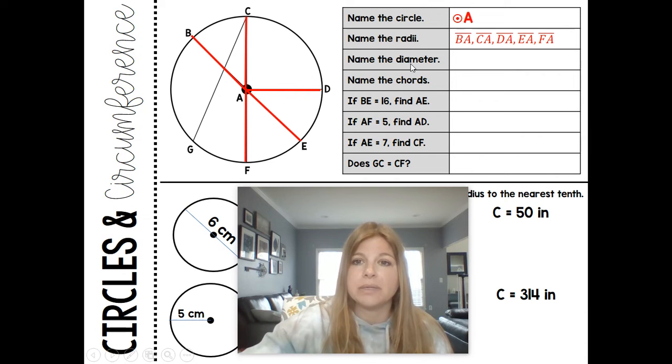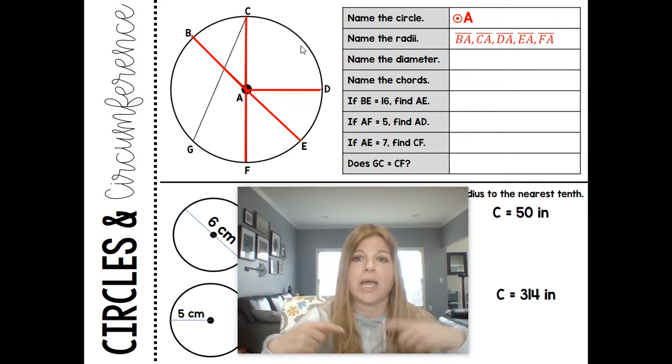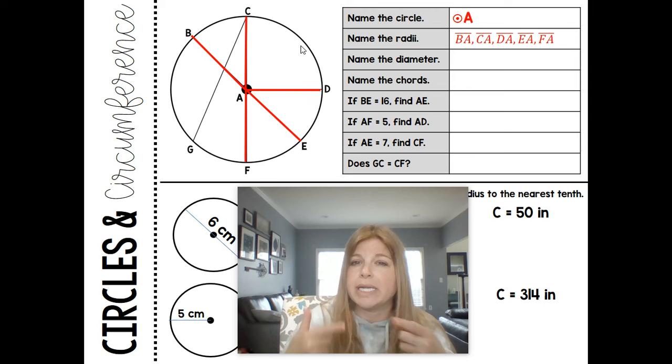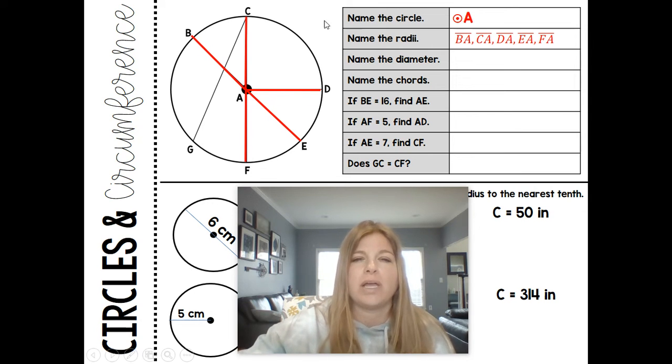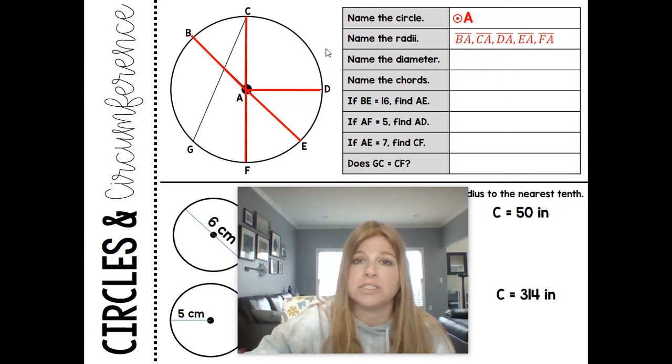A diameter. A diameter is a chord that goes through the center, and a diameter is really just the radius doubled. So if I look at this diagram, how many diameters do you think we have? It's two. Here's one, BE, but I put it in green, and the other one is CF. So we have two diameters here, BE and CF.